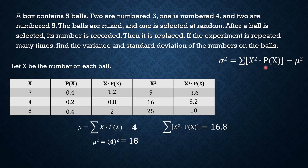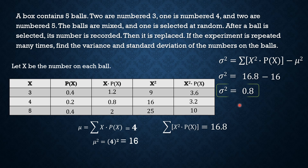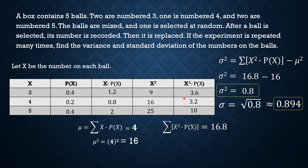Looking at the formula in computing for the variance, we substitute: sigma squared equals 16.8 minus mu squared of 16, and so our variance equals 0.8. By taking the square root of the variance, we get approximately 0.894 as our standard deviation. I hope that you learned something from the video. Thank you for watching.